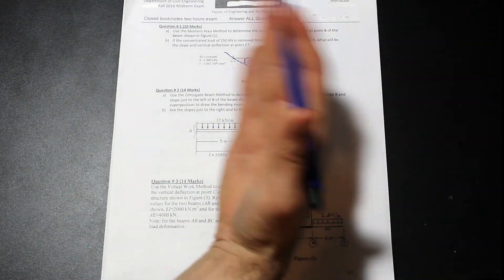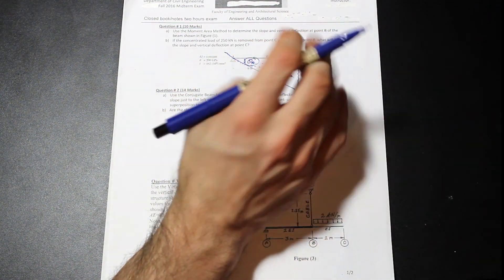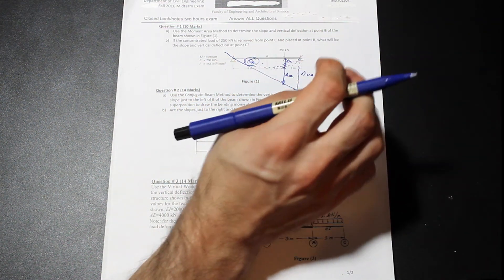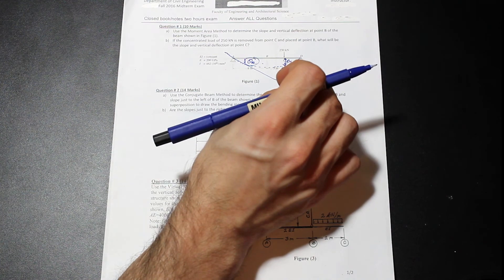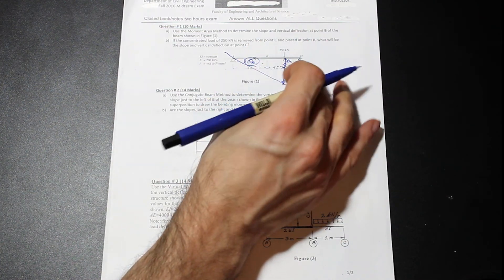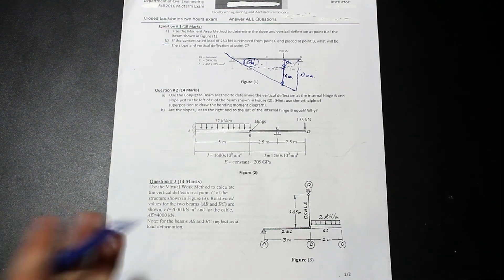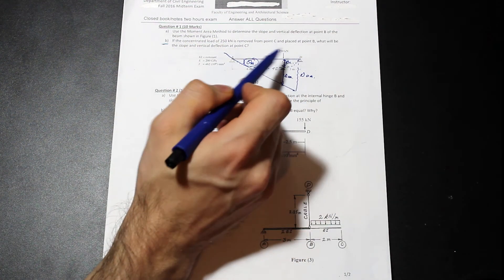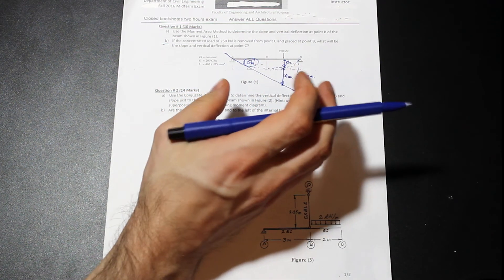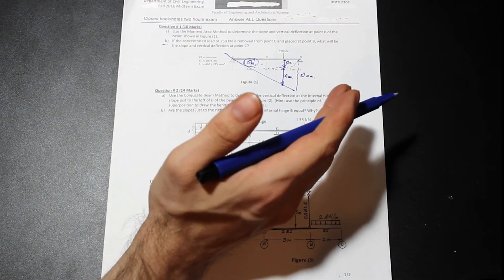So I'm going to link a video down below if you're interested in that. But it's a pretty basic, it can be a difficult concept actually, if there are hinges in the beam, that kind of stuff. But this question was pretty easy. And I noticed as well in this exam, the professor, he really liked to kind of change the question, but if you knew your stuff, it wouldn't be kind of that big of a change.